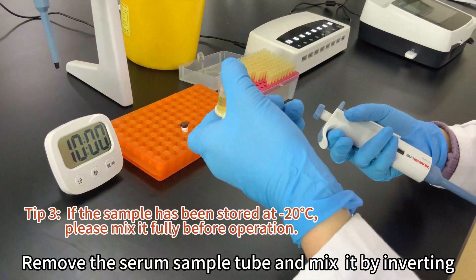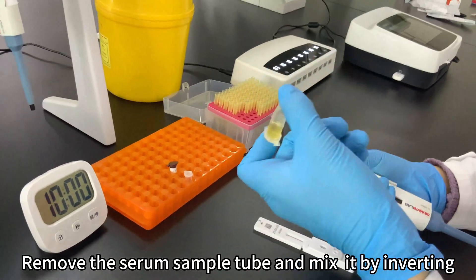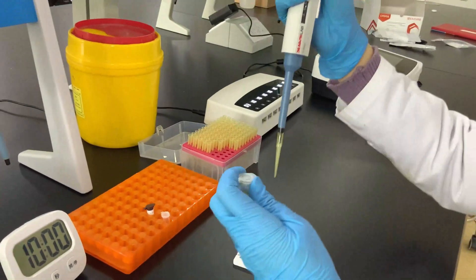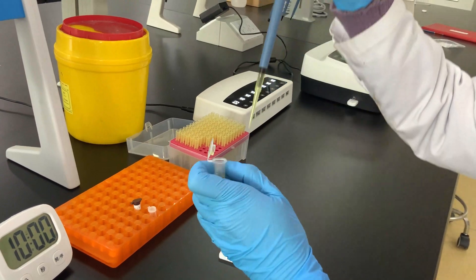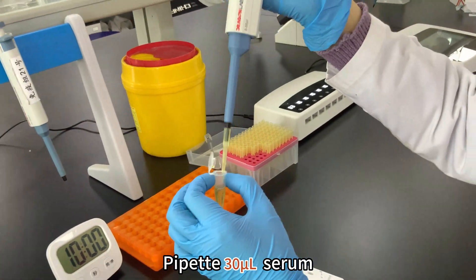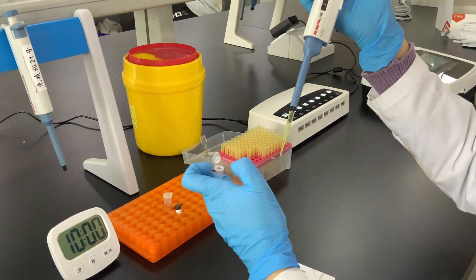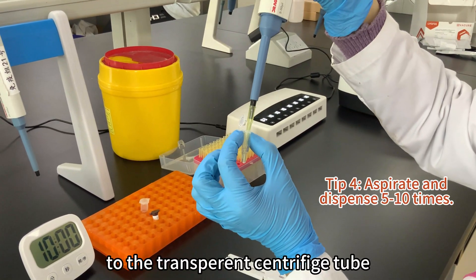Remove the serum sample tube and mix it by inverting. Pipette 30 microliter serum to the transparent centrifuge tube.